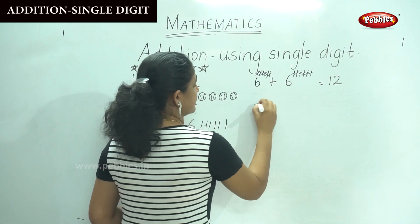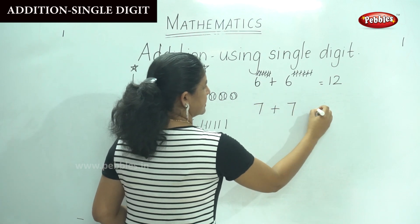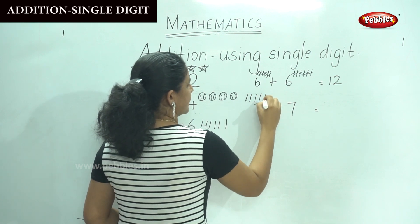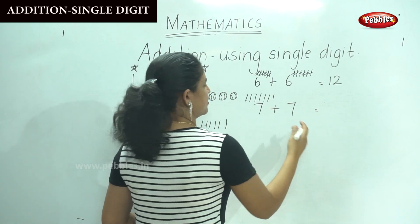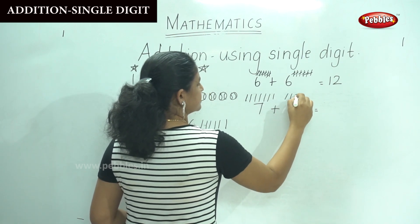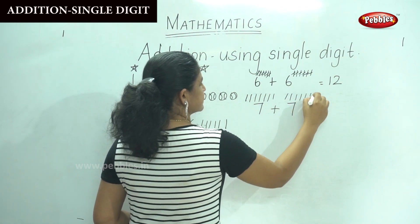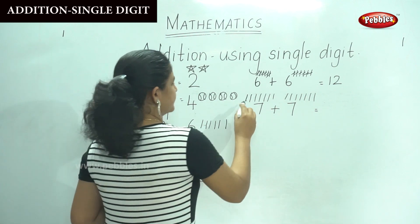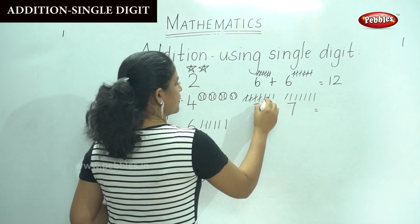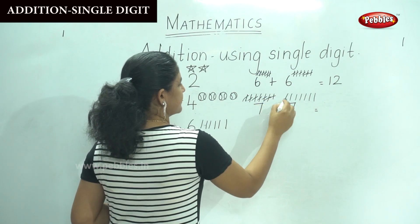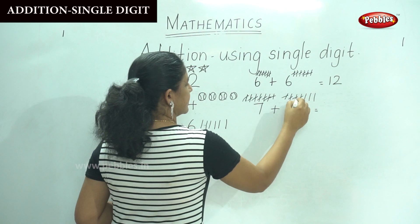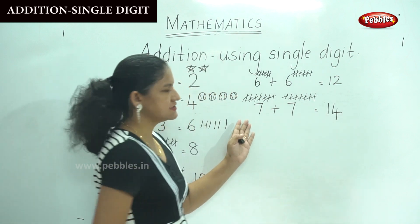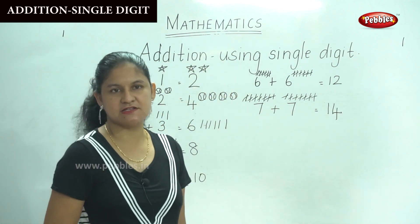Next, 7 plus 7. Drawing 7 sticks on each side: 1, 2, 3, 4, 5, 6, 7 and on the other side also 7. Counting all the sticks together: 1, 2, 3, 4, 5, 6, 7, 8, 9, 10, 11, 12, 13, 14. So 7 plus 7 gives us the answer 14.